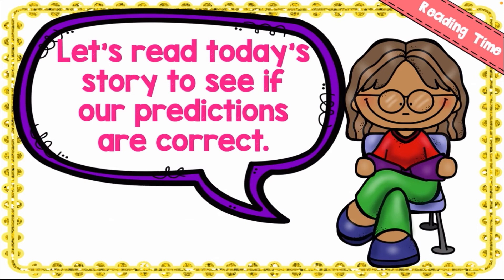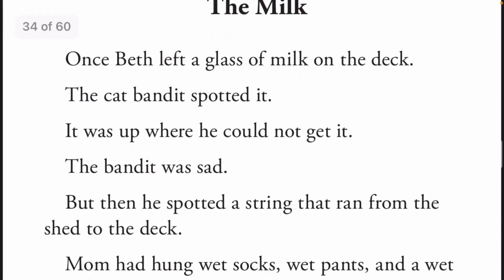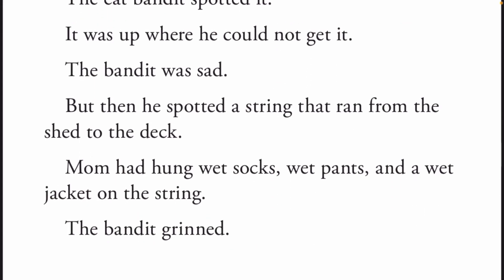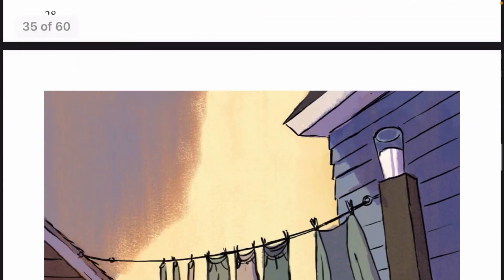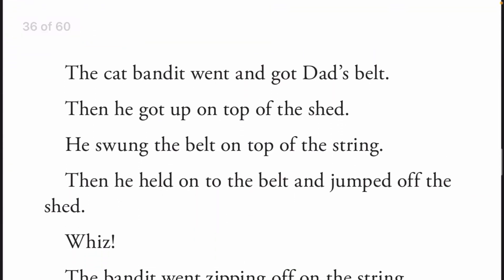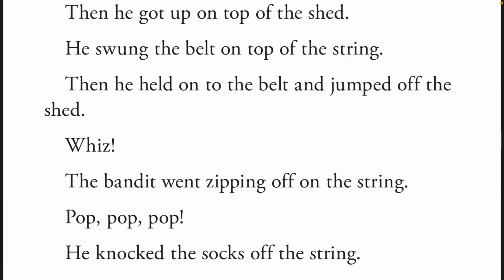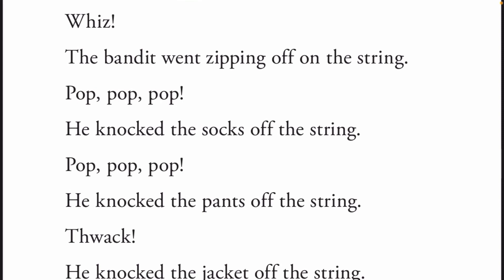The Milk: Once Beth left a glass of milk on the deck. The cat bandit spotted it — it was up where he could not get it. The bandit was sad, but then he spotted a string that ran from the shed to the deck. Mom had hung wet pants and a wet jacket on the string. The bandit grinned. He went and got dad's belt, got up on top of the shed, swung the belt on top of the string, held on, and jumped off the shed.